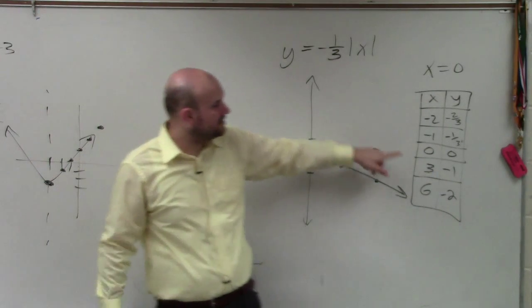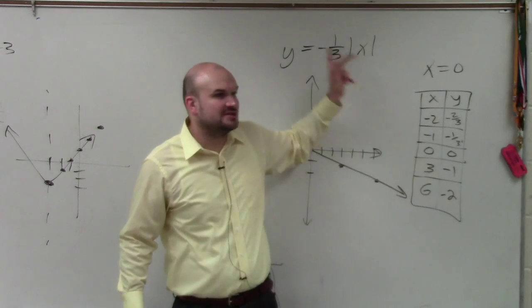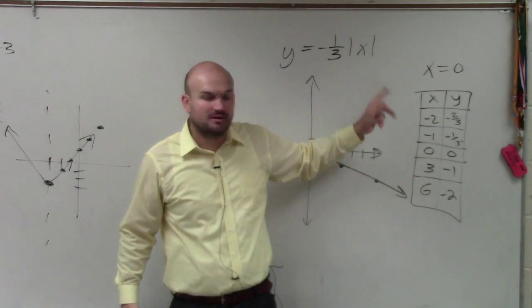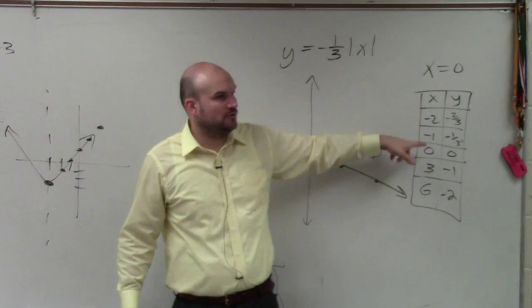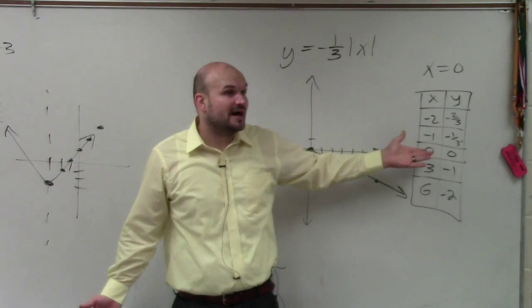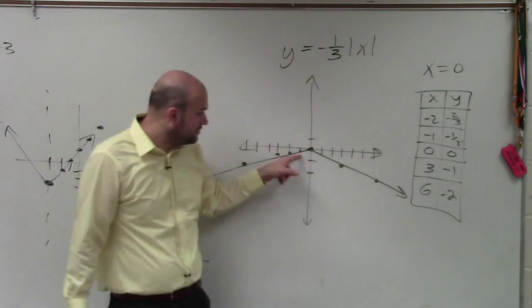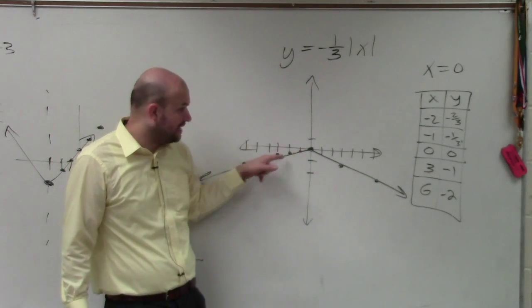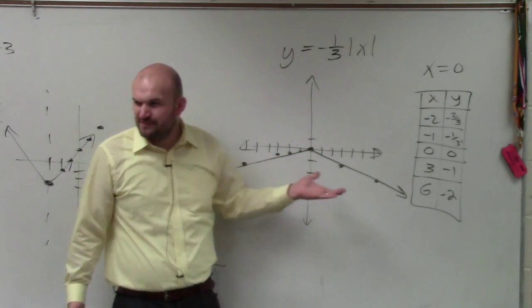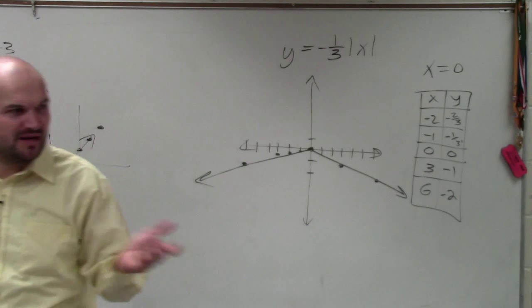Whenever you guys have a fraction, I like to choose values that your denominator is divisible into, rather than choosing just always negative 1, negative 2. Yes, those are nice. But they give you fractions, which you can do. These fractions, when I graph them, they're still on the graph. It's just more difficult. It can be more confusing. Anybody have any questions?